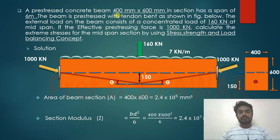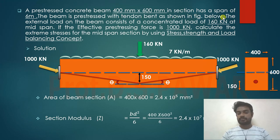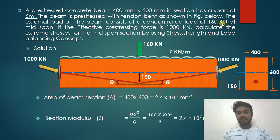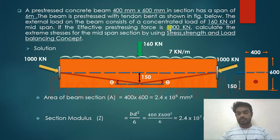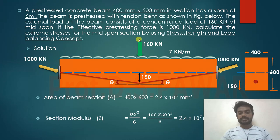A prestressed concrete beam 400 mm by 600 mm in section has a span of 6 meters. The beam is prestressed with a tendon bent as shown in the figure. The external load consists of a concentrated load of 160 kN at mid-span. The effective prestressing force is 1000 kN.